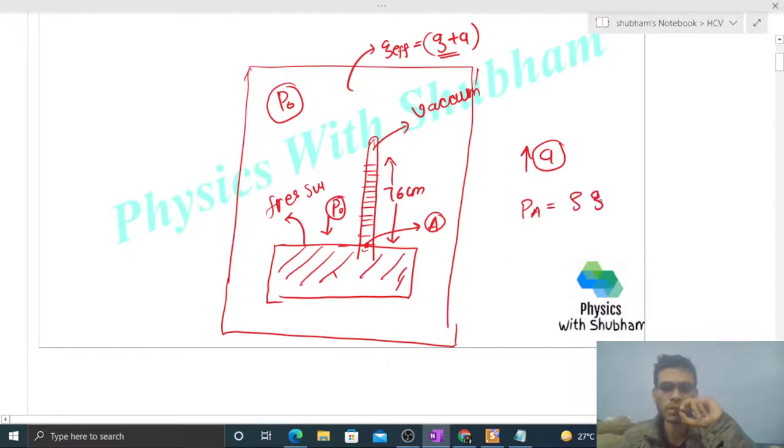...simply rho into (g plus a) into h, where rho is the density of mercury, g plus a is g effective, and h is the height of mercury inside this barometer tube, which is given as 76 centimeter.